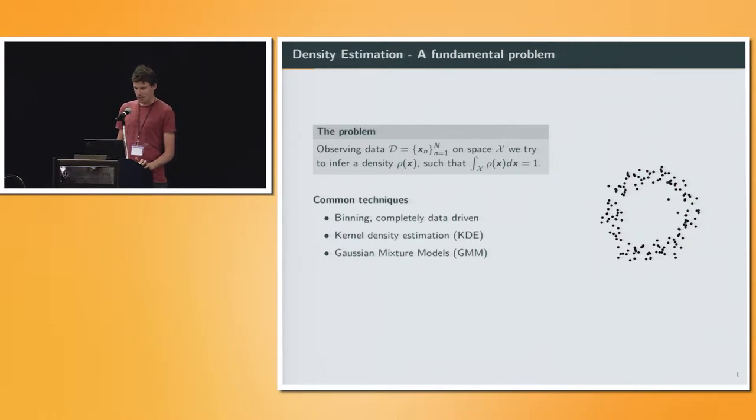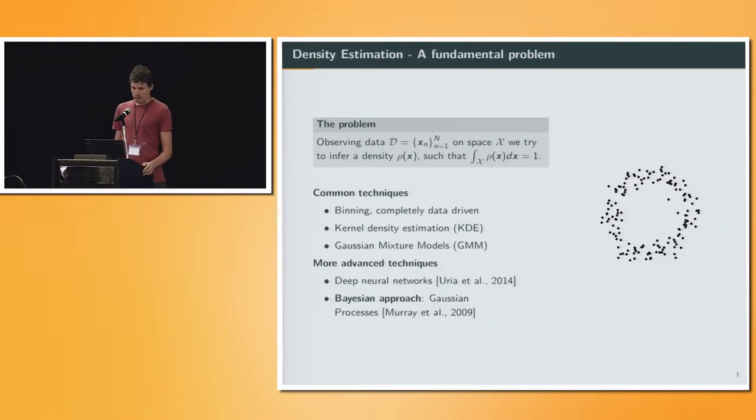Common techniques are binning, which is completely data-driven, kernel density estimation or Gaussian mixture models, and there are more advanced techniques like deep neural networks. We want to focus here on a Bayesian approach which was proposed by Jan Marais and colleagues almost 10 years ago, which involves Gaussian processes.